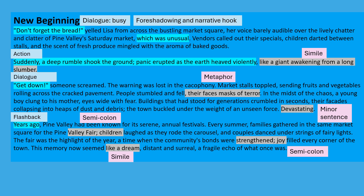As you can see, this story is a bit different and a lot more active. It starts with dialogue, and it's a very busy scene, and there is some foreshadowing and a narrative hook. The fact that the lady's voice is barely audible is unusual — so that's a bit strange — and then the action breaks out: the earthquake, the rumble shook the ground, and there is a simile like a giant awaking from a long slumber. The action continues and there's more dialogue. This is good to show your examiner that you can do this and punctuate dialogue. There's a metaphor — 'their faces masks of terror' — and a minor sentence: 'Devastating.' After the action comes a flashback to years ago, when there were happy scenes in the village. There are a couple of semicolons in that paragraph between sentences which are related in meaning, and a simile is highlighted: 'like a dream.'